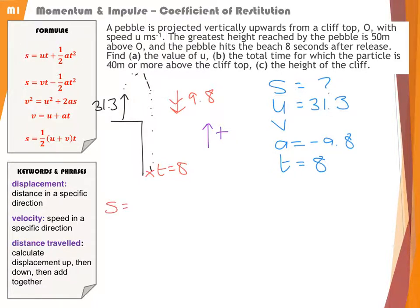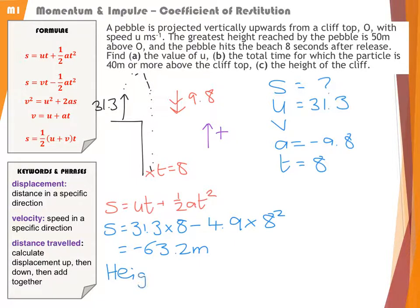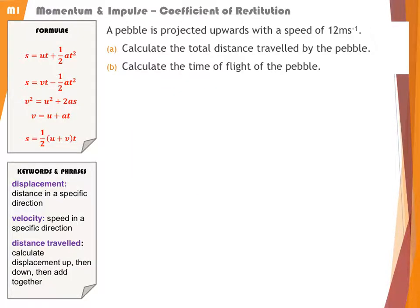Formula with S, U, A, and T is S = UT + ½AT². S = 31.3 × 8 - ½ × 9.8 × 8². That gives me a displacement of -63.2 metres, which makes sense because the pebble is going down, so it's a negative displacement. That tells me the height of the cliff is 63.2 metres.